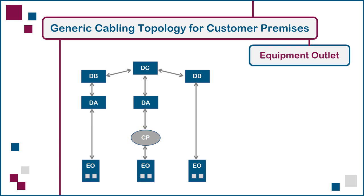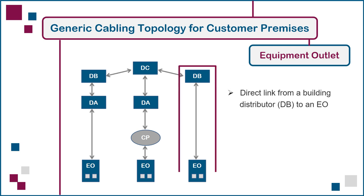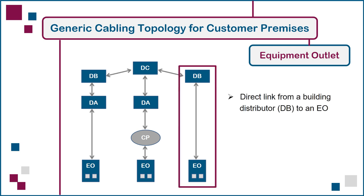The third possibility is a direct link from a building distributor, or DB, to an EO, without the need for another distributor, as highlighted here. This would be appropriate, for example, in a relatively small, single-floor building, where the DB can serve all equipment outlets in the building without exceeding cabling length limits.